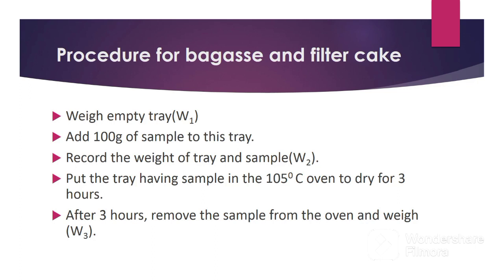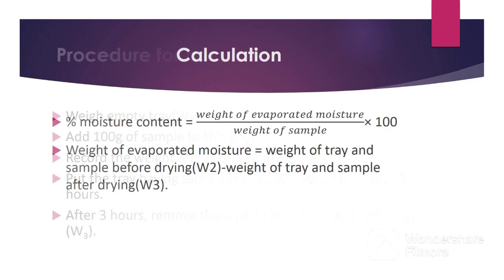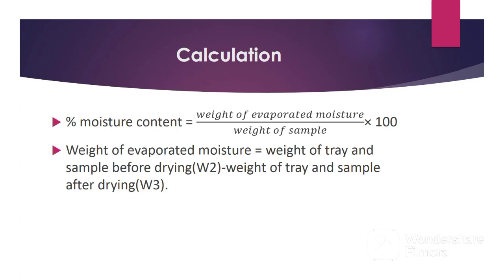The procedure for moisture content of bagasse and filter cake is the same for both. Weigh the empty tray, record the weight as W1. Add 100 grams of sample to the tray and spread evenly for efficient drying. Record the weight of the tray and sample as W2. Put the tray in the oven to dry for three hours. After three hours, remove the sample from the oven and weigh; record this weight as W3. After obtaining the weights before and after drying, the next step is to perform the calculation. Moisture content (%) = (weight of evaporated moisture / weight of sample) × 100.